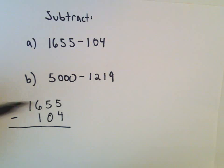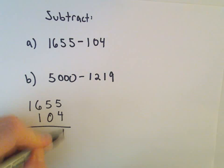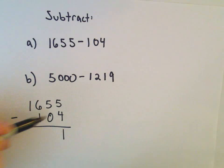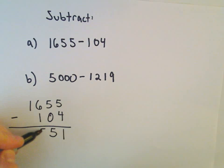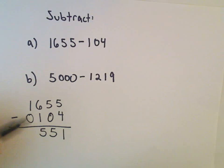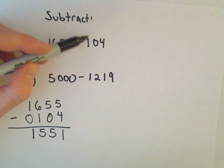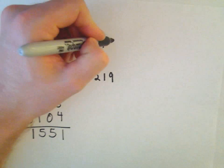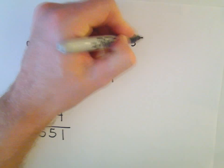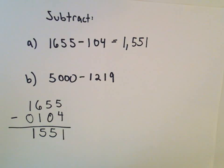Well, if we just do 5 minus 4, that's going to be 1. 5 minus 0 is going to be 5. 6 minus 1 is 5. And you can think about this digit as being a 0. 1 minus 0 is just going to leave us with 1. So 1,655 minus 104 is going to leave us with 1,551.